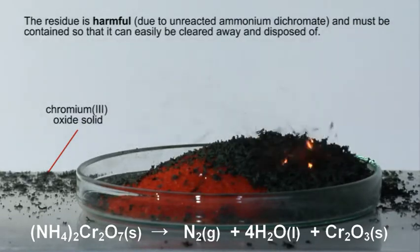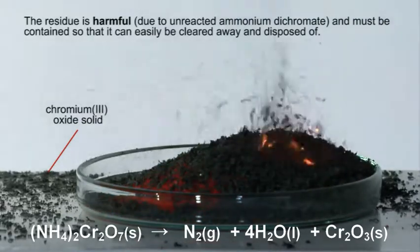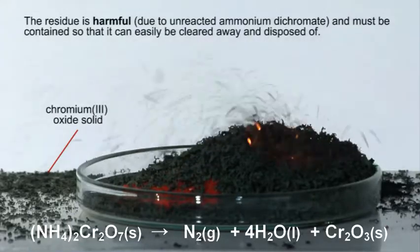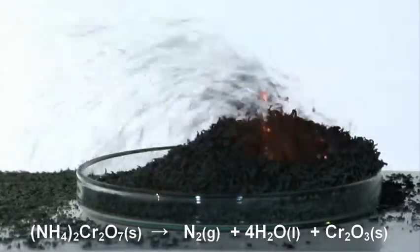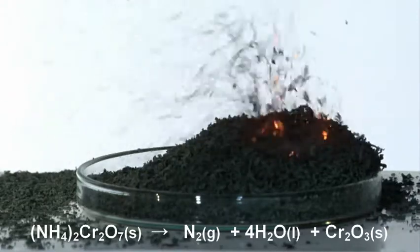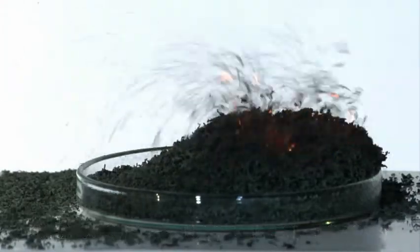The dichromate ions are strongly oxidising. They react with ammonium ions, oxidising them to nitrogen gas and water, the dichromate being reduced to chromium-3 oxide.